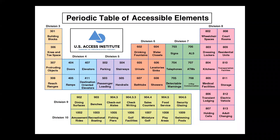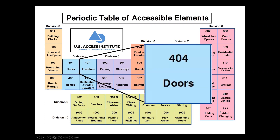Okay, here we go. First, we start with the periodic table of accessible elements. It's not a real table in the access standard sense of things, but we want to make access fun. Next, we'll drill down to section 404, and that covers doors, doorways, and gates.